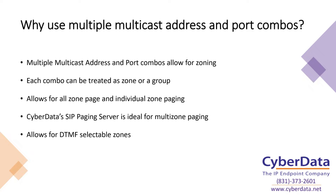It also makes it easier for the humans — the people actually working on the system — so they can tell the difference between all these different things at a quick glance, because 2.3.4 is much different than 2.3.9. For conversation's sake, when talking about this combination of multicast address and ports, that combo is essentially a zone or a group. They have different terminology depending on the manufacturer or general understanding of the process. Zone or group can be used interchangeably.